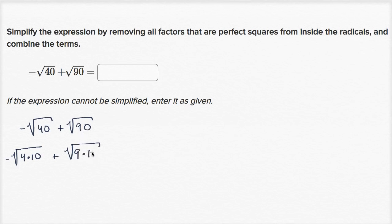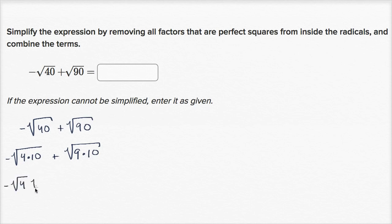So 10 does not have any perfect squares in it anymore. If you wanted to do a full prime factorization of 10, it would be 2 times 5. So there's no perfect squares in 10. So we can work it out from here. This is the same thing as the negative of the square root of 4 times the square root of 10, plus the square root of 9 times the square root of 10.